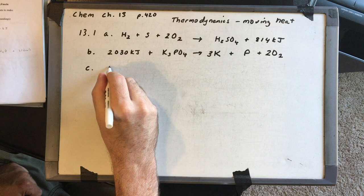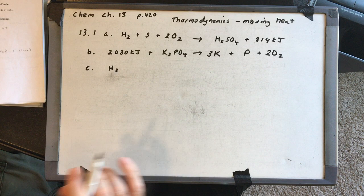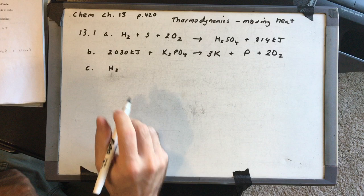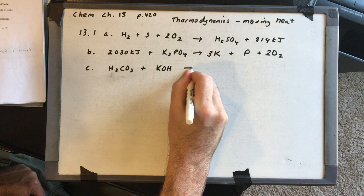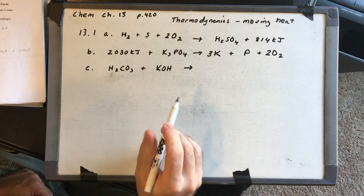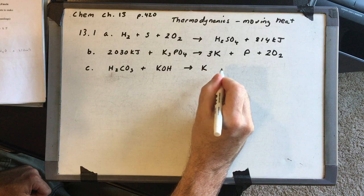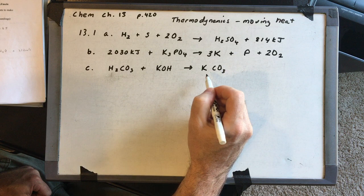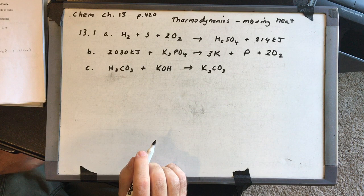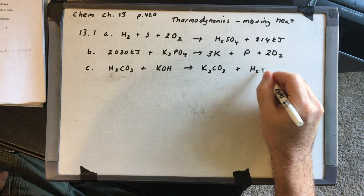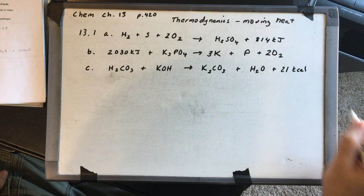Part C: the reaction between H2CO3 and KOH releases 21 kilocalories. If energy is released, that means it's exothermic, so 21 kilocalories goes on the right side. H2CO3 (carbonic acid) plus KOH (potassium hydroxide) — an acid plus a hydroxide base makes a salt plus water. The salt is made from potassium and carbonate, giving K2CO3, so the products are K2CO3 plus water plus 21 kilocalories.